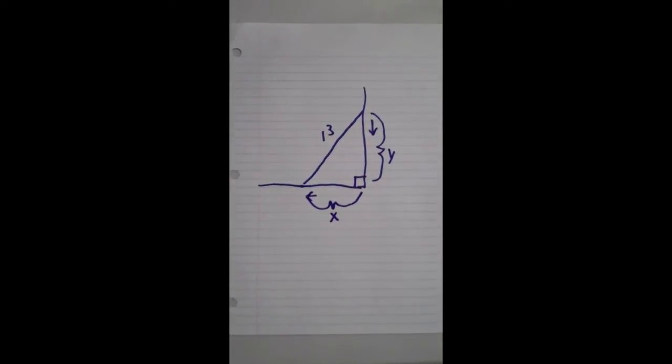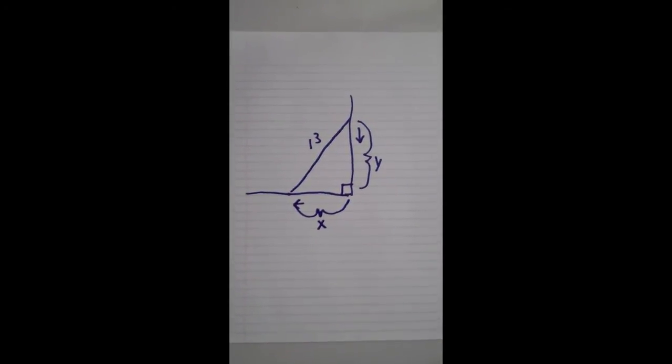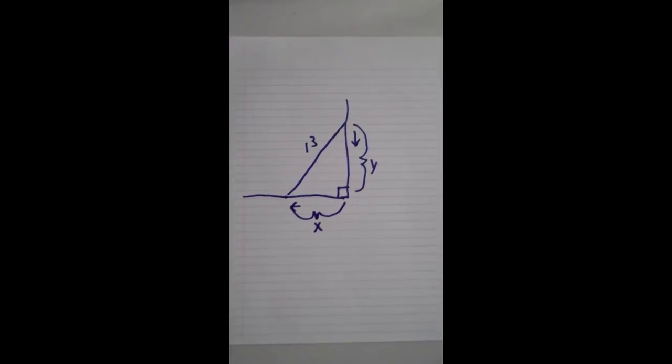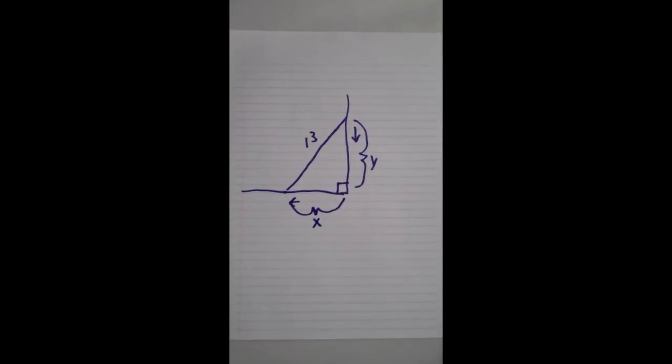Okay, now what they're asking us for here is how fast the bottom of the ladder moves along the ground at a certain time given that the top of the ladder is falling at a specific rate.